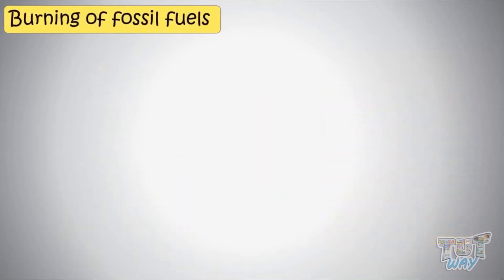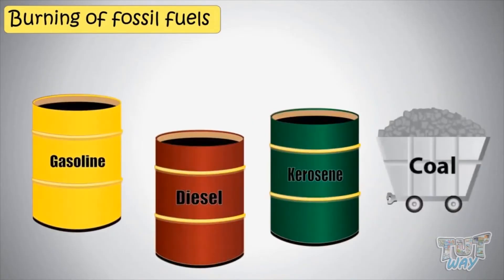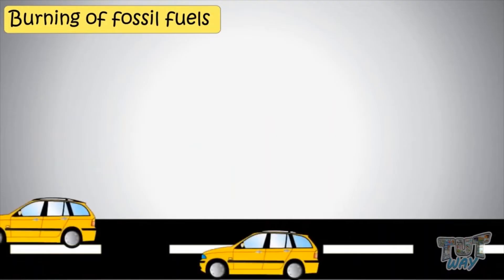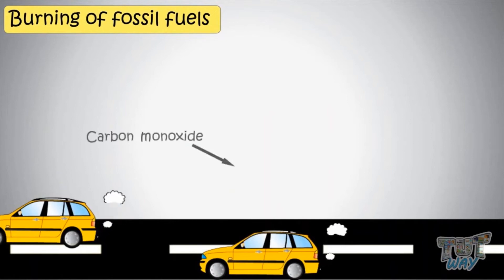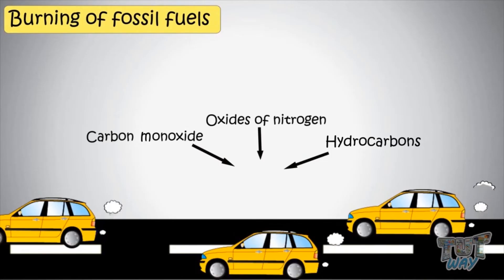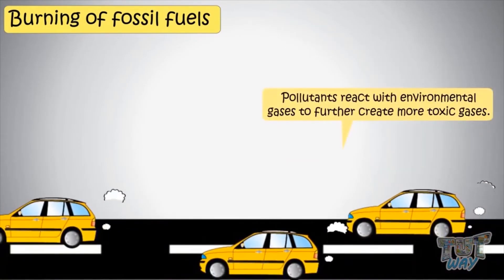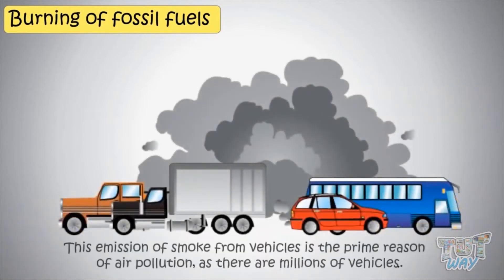Burning of fossil fuels: fuels like gasoline, diesel, kerosene, and coal are examples of fossil fuels. All vehicles use fossil fuels, mainly gasoline, for running and emit a lot of smoke that contains pollutants like carbon monoxide, oxides of nitrogen, hydrocarbons, and particulates. They cause great harm to people who breathe them, and additionally they react with environmental gases to create further toxic gases. This emission of smoke from vehicles is a prime reason of air pollution, as our world consists of millions of vehicles, and every person's life relies on some or the other kind of vehicle.